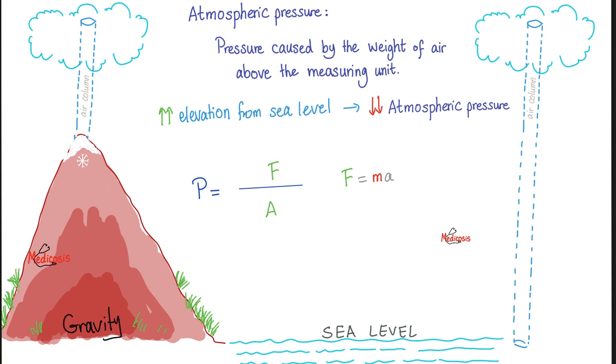Pressure equals force over area. At sea level, there is more air above you, therefore more force. But on top of a mountain, there is less force and therefore lower pressure.